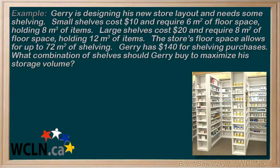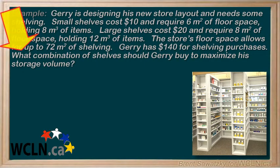Now at this point you should have given this question a good try. So let's just jump in and see how you did. Let's set our main variables to start. We see that we're supposed to determine how many small and large shelves that Jerry should be buying.